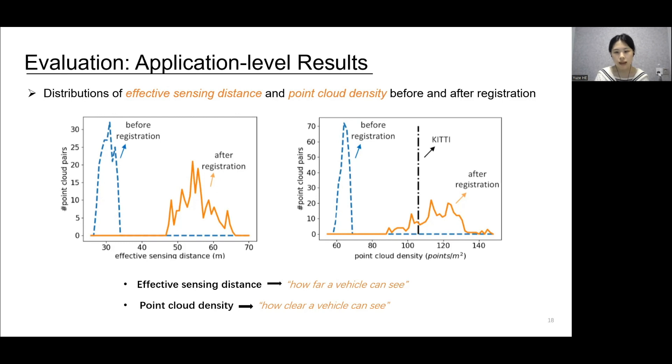It can also be seen from the figure that VII boosted the point cloud density even higher than that of the expensive LiDAR used in the public KITTI dataset. In summary, from the application-level perspective, VII can enable significantly longer sensing range and a finer grained perception for autonomous vehicles.